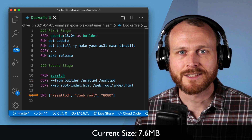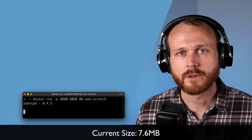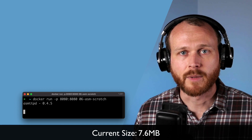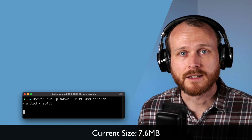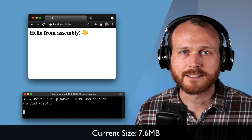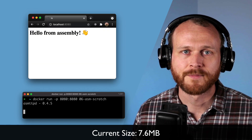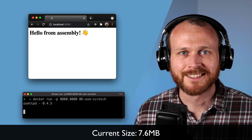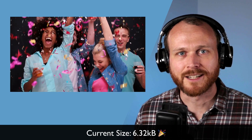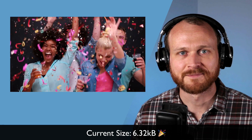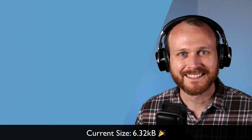To demonstrate that it works, I'll run docker run with port forwarding 8080 from my localhost into the container, and then the name of the container. I can then access it on localhost through the browser. The size of this image is 6.32 kilobytes. What is this — a container for ants?